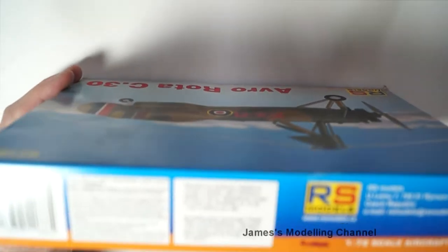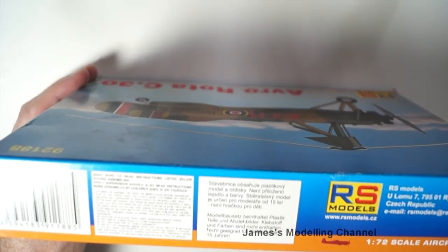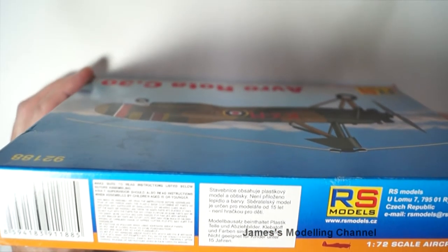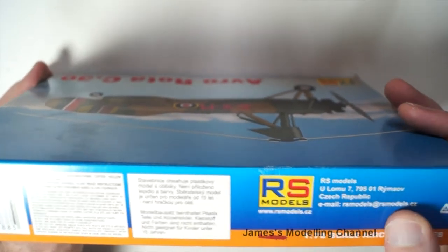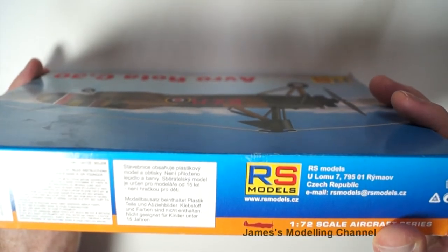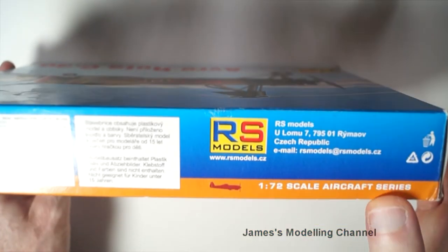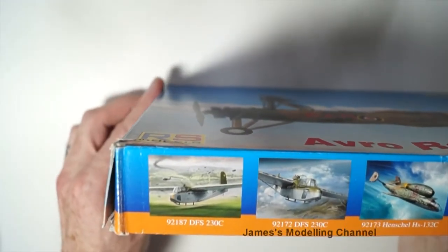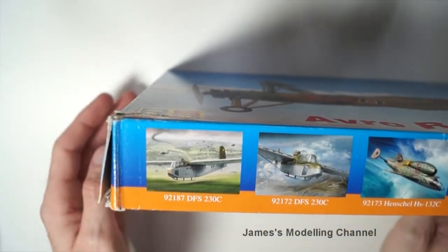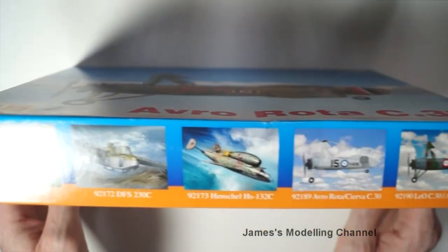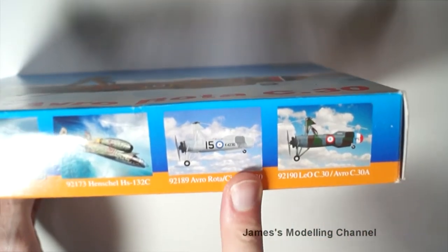Around the box, there are some safety instructions, the website of RS Models, and the scale. On the other side are some other kits in the range - two more Auto Gyros here.